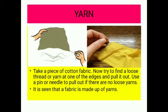Yarn. Take a piece of cotton fabric. Now try to find a loose thread or yarn at one of the edges and pull it out. Use a pin or needle to pull out if there are no loose yarns. You can use some old piece of cloth left at home after your clothes have been stitched. You can simply see that there are loose yarns coming out and you can easily pull them out, as you can see in this figure. A fabric is made up of yarns.